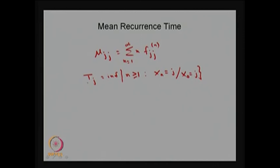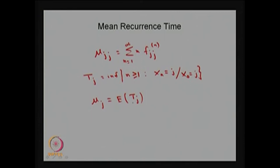Whatever is the first integer, that is going to be T_j, and this is a random variable. Using this random variable you can also give the definition of mean recurrence time. μ suffix j is nothing but the expectation of the random variable T_j. So T_j gives the step denoting the first return time, and therefore the expected first passage time can be written as μ suffix j. Both μ_j and μ_jj are one and the same — one approach uses the distribution to compute the mean, and the other finds the average time using the expectation of T_j. In both ways one can define the mean recurrence time.